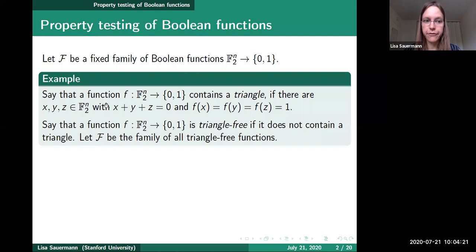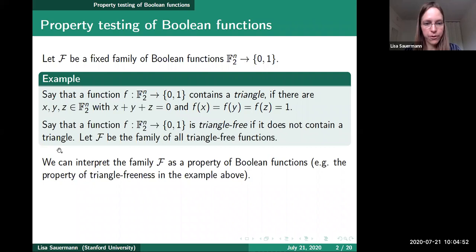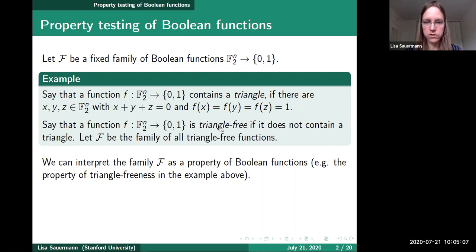Let me start with an example that will play an important role in this talk. We say that a function f from F2^N to {0,1} contains a triangle if there are three vectors x, y, and z such that x+y+z=0 and they are all mapped to 1. We call such a configuration a triangle. A function is triangle-free if it contains no triangle. The family of all triangle-free functions is an example of a property — the property of being triangle-free.